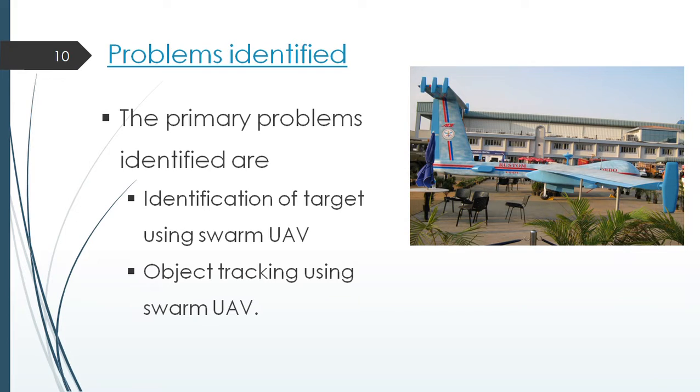Problems identified. The primary problems identified were identification of target using swarm UAV, object tracking using swarm UAV. Another secondary problem is that drones as big as the one in the picture cannot be used in swarms because of their bulkiness.